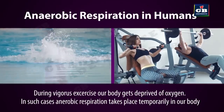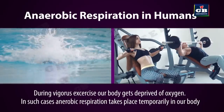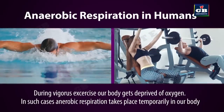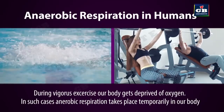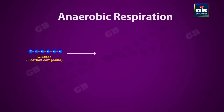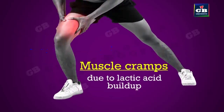Sometimes, even in our bodies, anaerobic respiration takes place. While doing vigorous exercise, the oxygen levels decrease in our muscle cells, leading to oxygen deprivation and anaerobic respiration. In anaerobic respiration, pyruvic acid molecules turn into lactic acid by releasing energy. The buildup of lactic acid in the muscle tissue leads to muscle soreness or muscle pain.